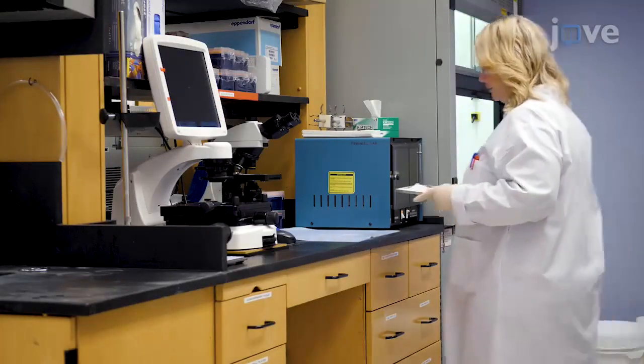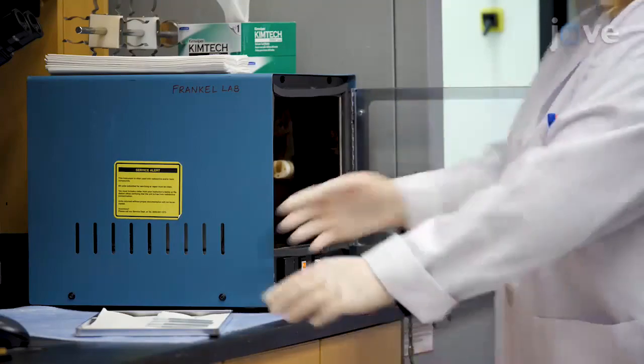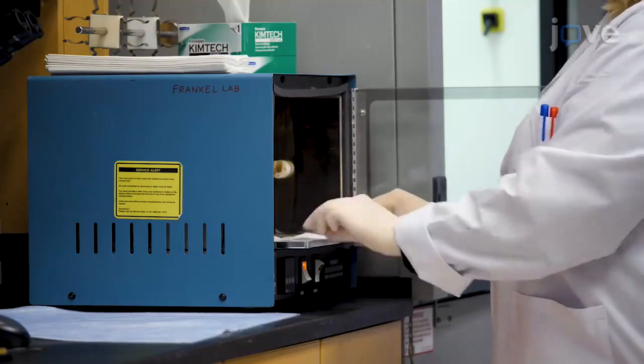Begin by de-paraffinizing and rehydrating the slides. Lay them in the hybridization oven with tissue side up and bake them at 60 degrees Celsius for an hour.